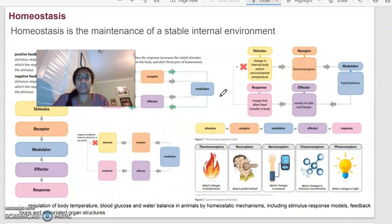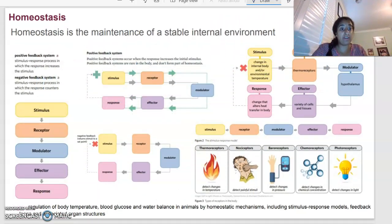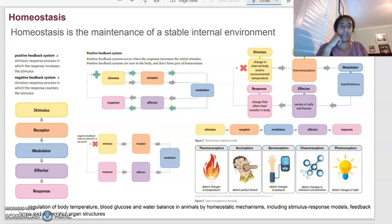Next bit is looking at homeostasis. So homeostasis is basically the maintenance of a stable internal environment. So no matter what the temperature is outside, no matter what the pH is, no matter what is happening outside of the body, our internal environment is going to remain stable. And our body has different ways that we can sort of adjust to the changes that are happening.